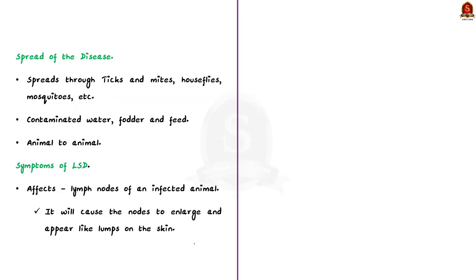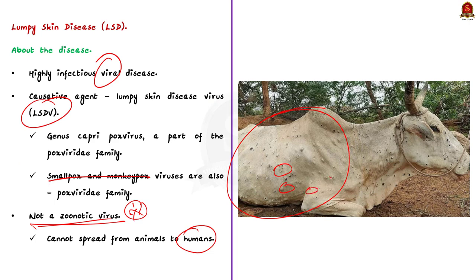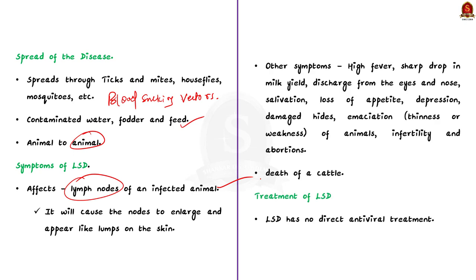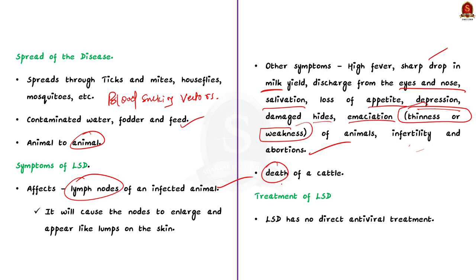LSDV spreads through blood-sucking vectors like ticks, mites, house flies, and mosquitoes, as well as through contaminated water, fodder, and feed, and in some cases directly from animal to animal. LSD affects the lymph nodes of an infected animal, causing them to enlarge and appear like lumps on the skin — hence the name. Other symptoms include high fever, sharp drop in milk yield, discharge from eyes or nose, salivation, loss of appetite, depression, emaciation, infertility, abortions, and even death of cattle.